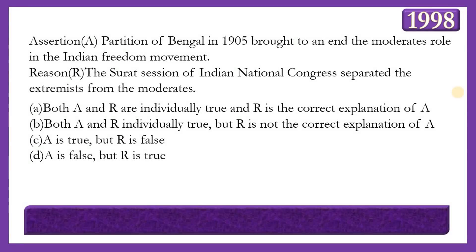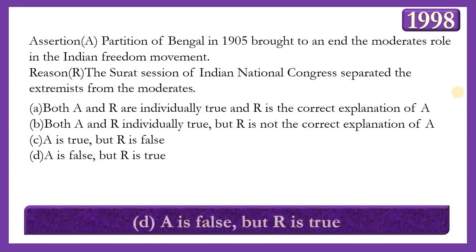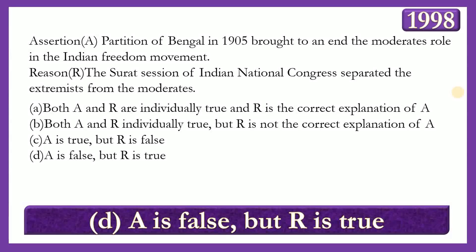Next assertion-reason question. Assertion: Partition of Bengal in 1905 brought an end to the moderate role in India's freedom movement. Reason: The Surat session of the Indian National Congress separated the extremists from the moderates. The answer is option D — the assertion is false but the reason is true — because moderates continued to participate in the struggle for freedom even after the partition of Bengal, and later in 1916 both groups reunited in the Lucknow session.